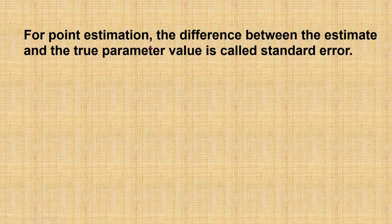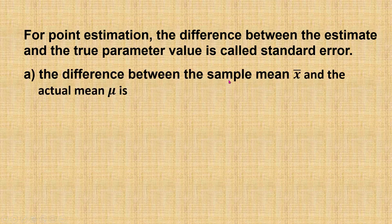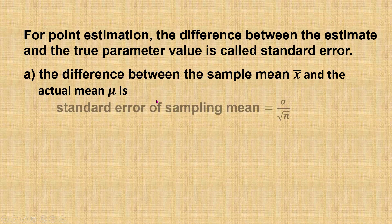For point estimation, the difference between the estimate and the true parameter value is called standard error. When using sample mean to estimate the population mean, the difference between the sample mean and the true value of the mean is called standard error of sampling mean, which is equal to sigma divided by square root of n.